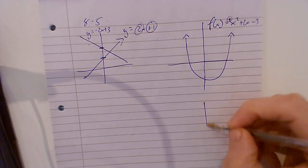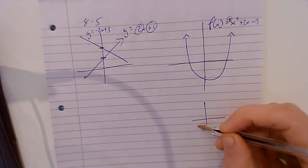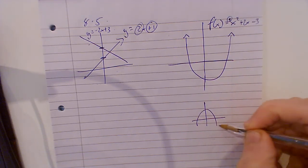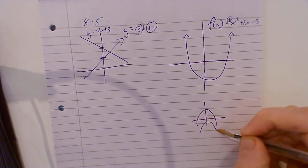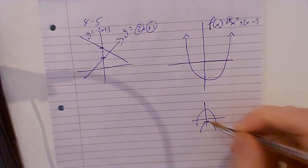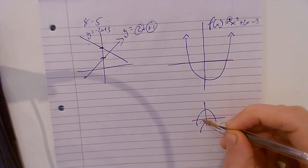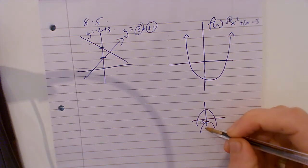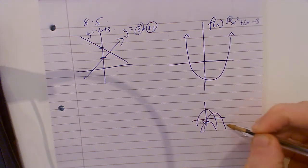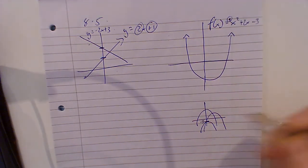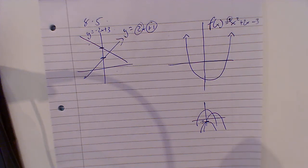If it was minus, it'd be shaped like that. It'd be shaped like that because the y-intercept would still be here. Or it could be shaped like that. All we know is the y-intercept is there and it's n-shaped.